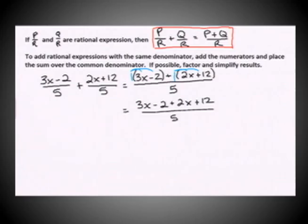The next step of the process is to combine any like terms in the numerator. So that would leave us, we have a 3x and a 2x, which gives us a 5x, and a negative 2 and a positive 12 gives positive 10 over 5.